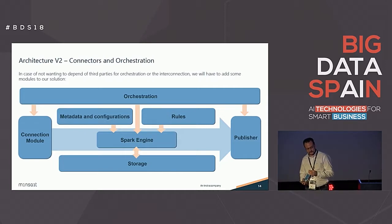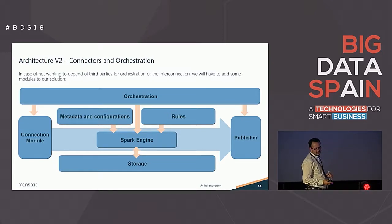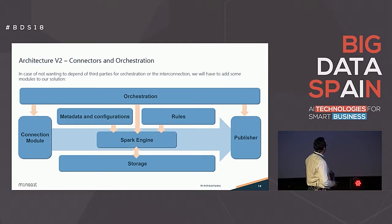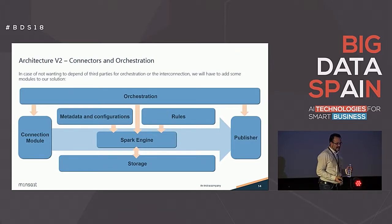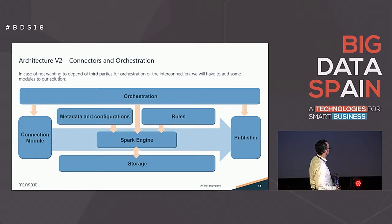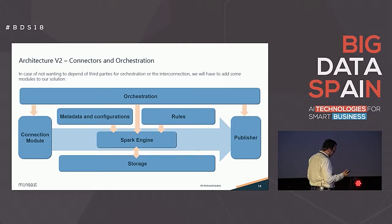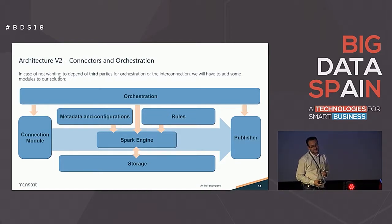In the second version of the architecture, we realized we didn't want to depend on third parties or have anyone orchestrate our solution. So we started using Oozie, because we already had it in our Cloudera. We decided we didn't want to depend on files or third parties in between to give us information from the input and the output. The connection module and the publisher are two sides of the same coin — they have the same technologies and do the same thing, but sometimes the task is to connect the systems, and other times to send or publish the information.